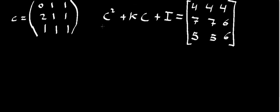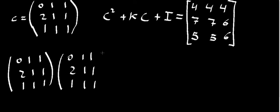We're going to start by calculating the square of C, so C squared is going to be C times C. Basically, 0, 1, 1, 2, 1, 1, 1, 1, 1, this times 0, 1, 1, 2, 1, 1, 1, 1, 1. We're going to get another 3 by 3 matrix.